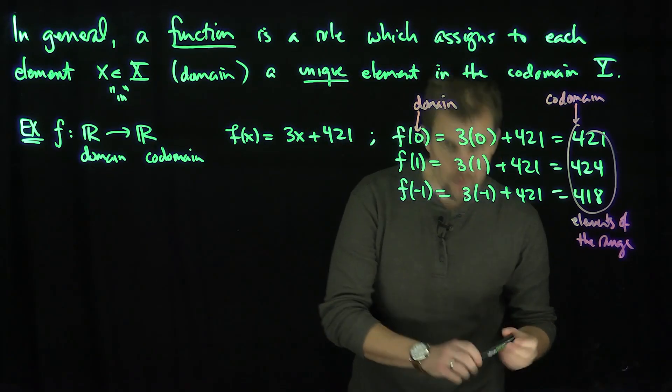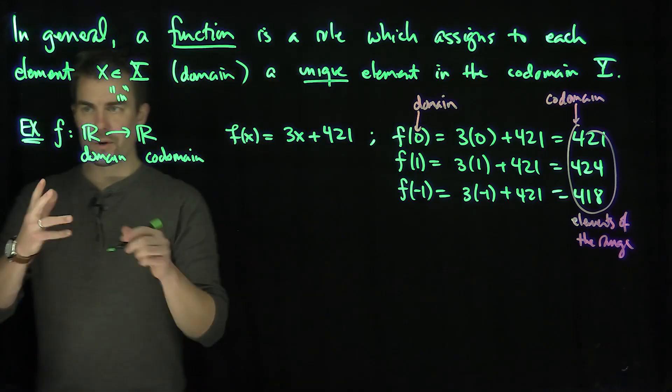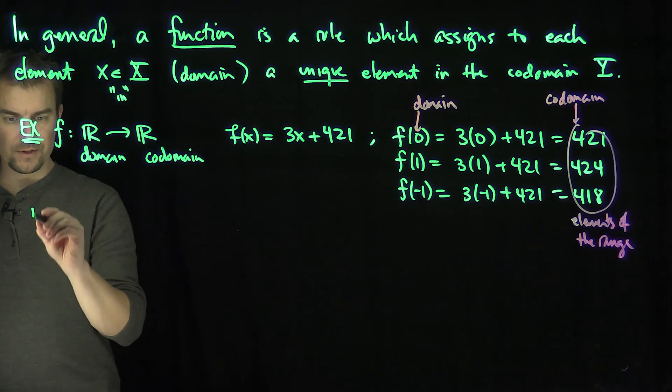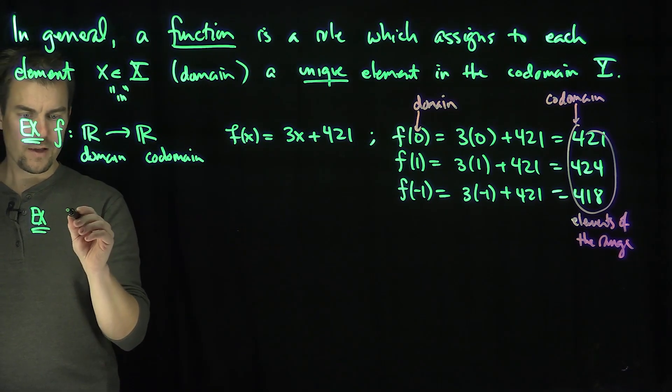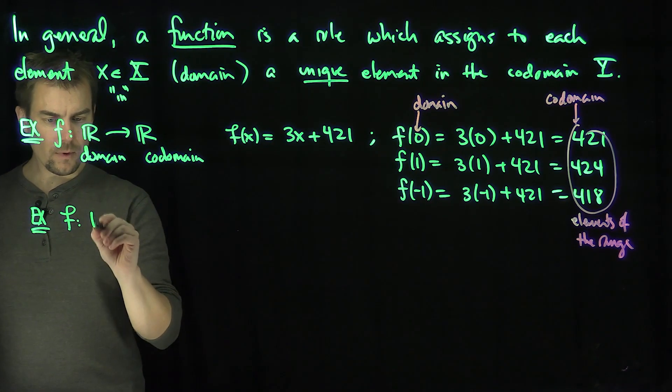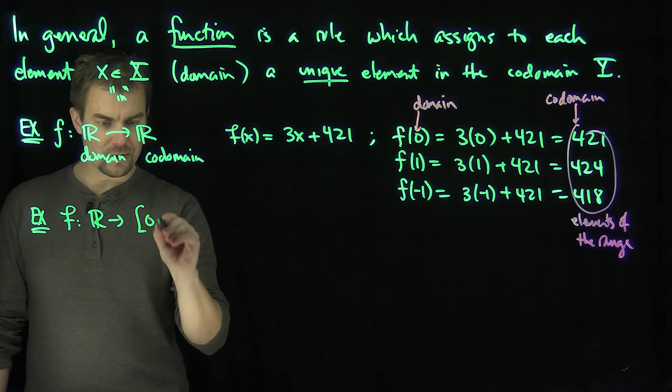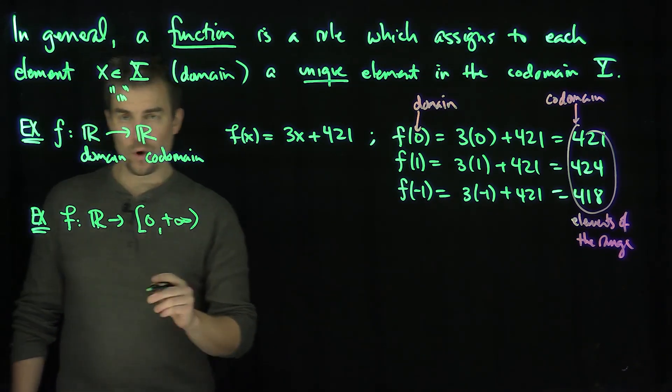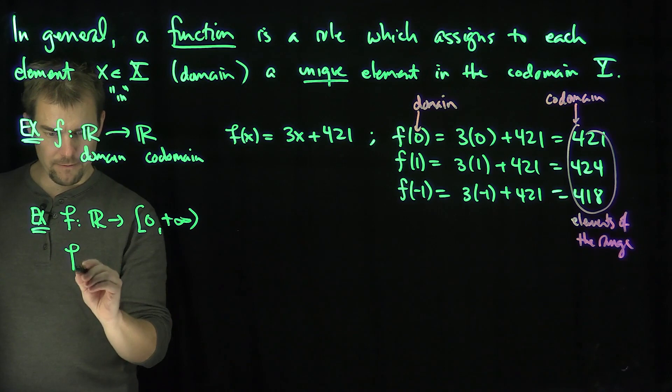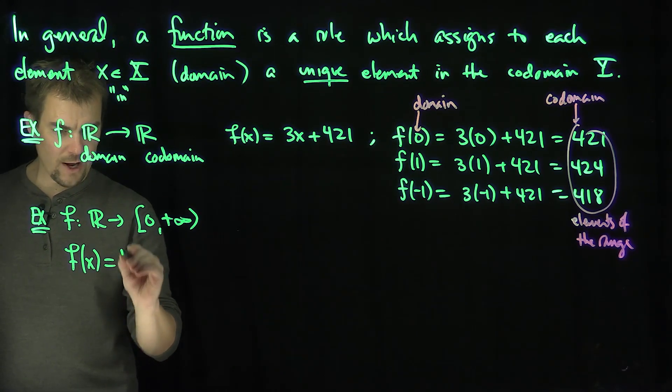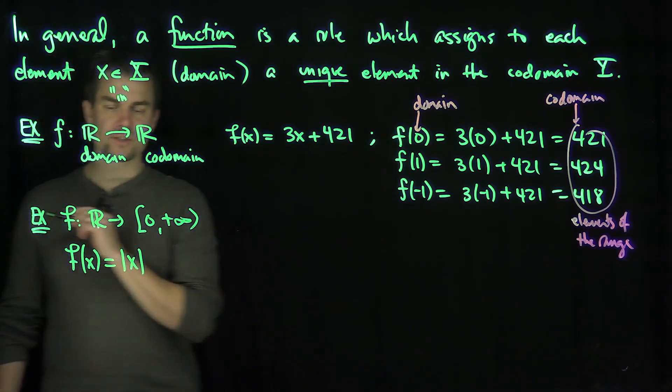And let me convince you that we're very comfortable and used to functions from ordinary pre-calculus and other classes. So for example, I can do another example of a function over here. I can look at a function f, which maps R into, now I'm going to use some interval notation over here, zero to plus infinity. And what rule is this? So this function, f(x), will just output the absolute value of x.